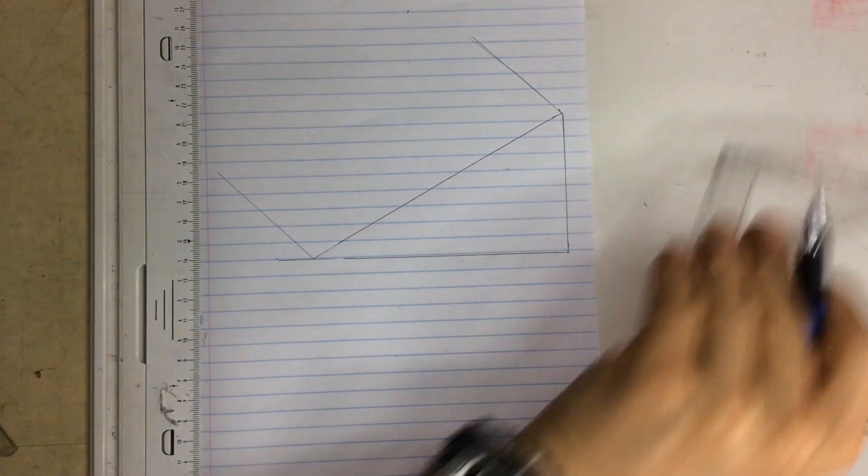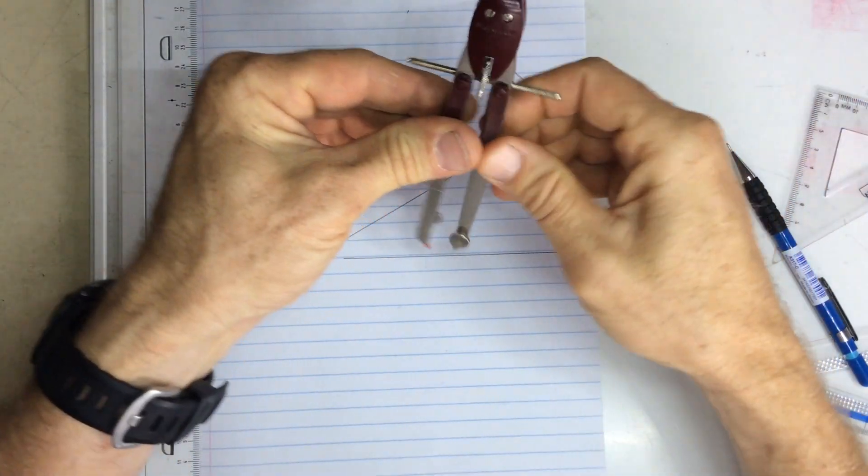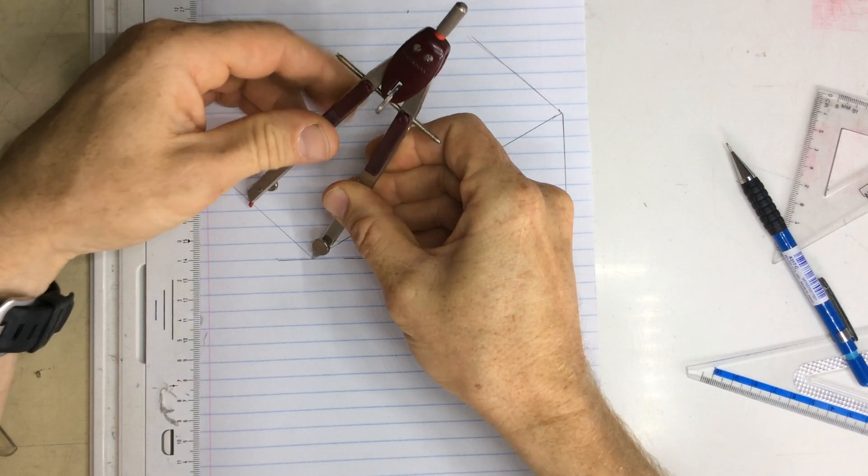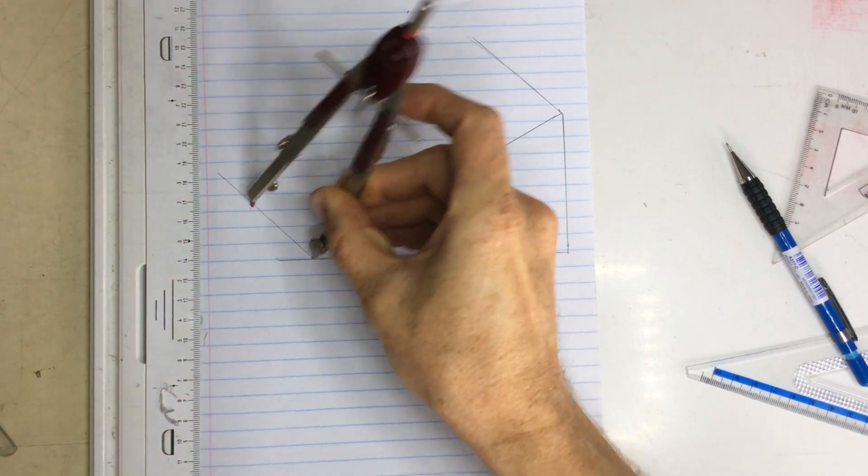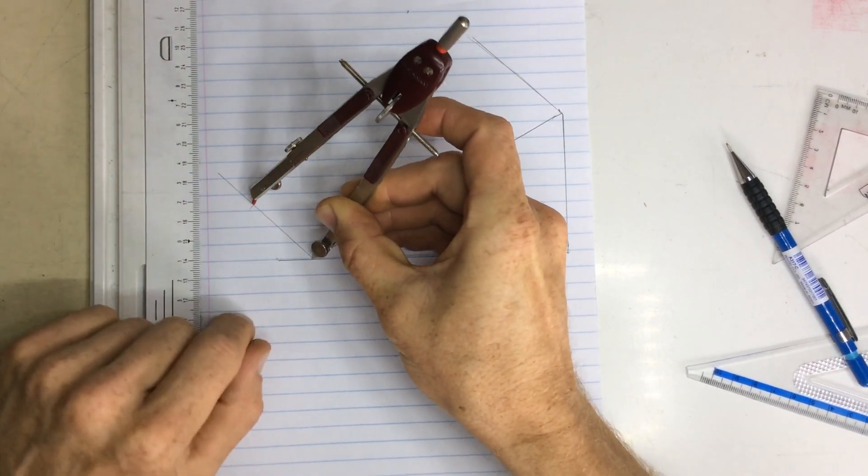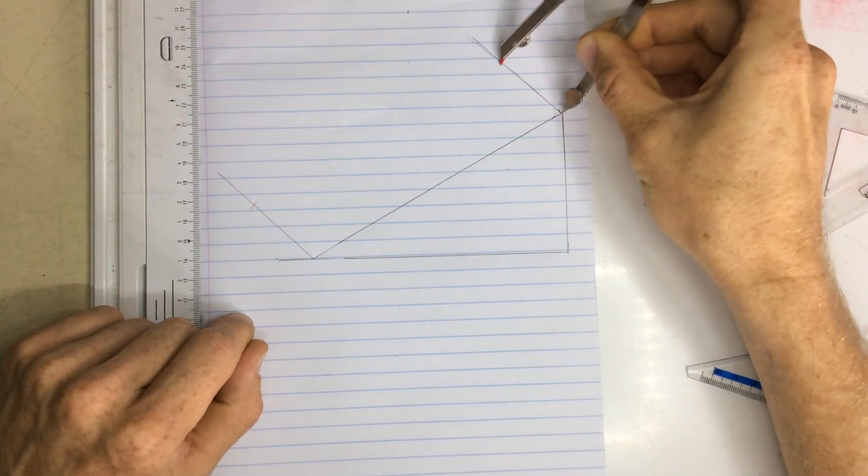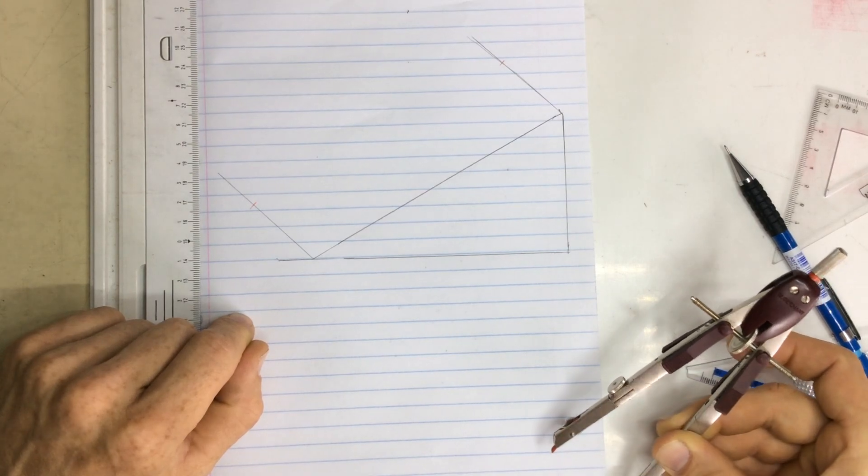Once I've got that, I'm then going to just set my pair of compasses to a particular length. Doesn't need to be accurate or anything. And I'm marking off on that 45 degree line a mark over there and go up to the top corner over there and I mark off another little mark.